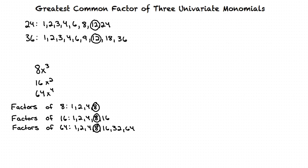Next, we will find the Greatest Common Factor of the variables. We will factor x cubed so that we can see x cubed as a product of prime factors — this means x times x times x. Now we will factor x squared as a product of prime factors, which means x times x.